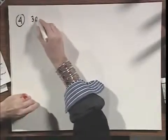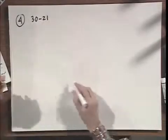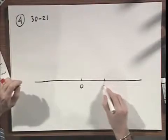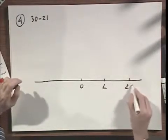Problem 4 is 30-21. Here, linear axis: 0, L, 2L, minus L, minus 2L.